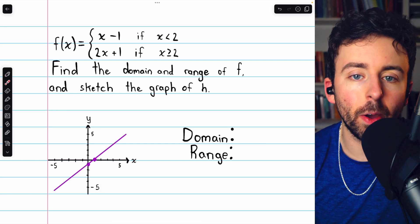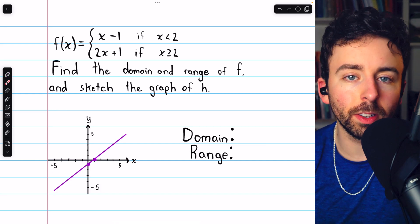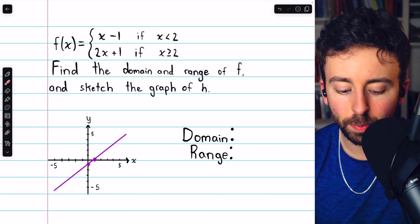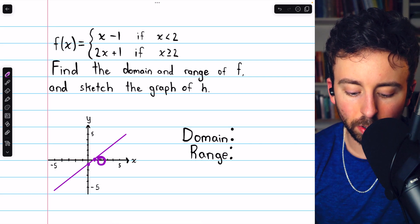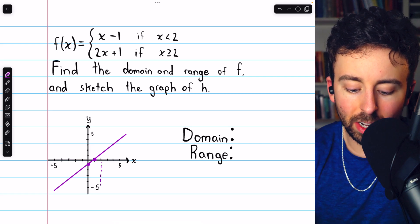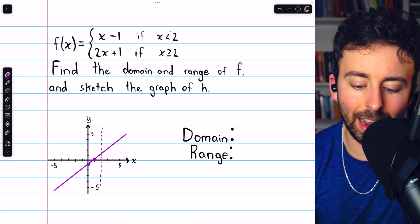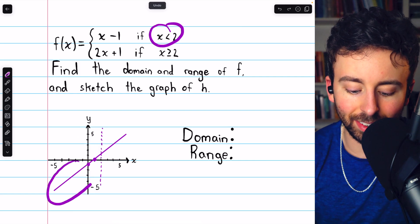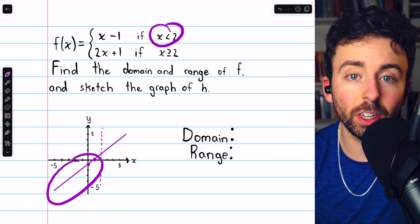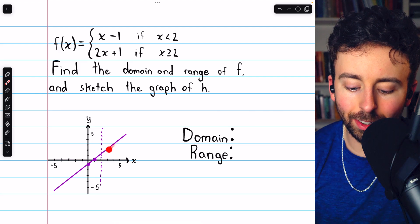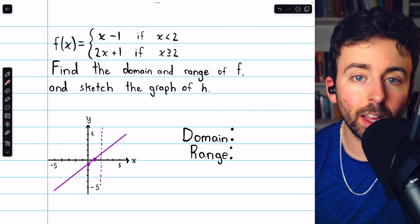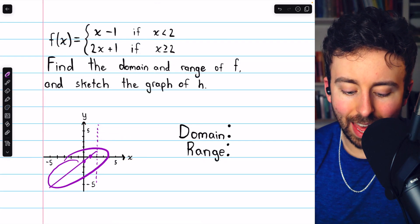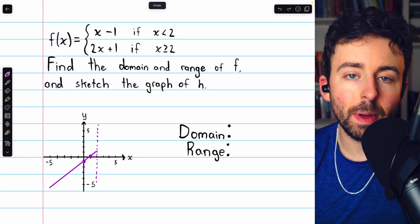The problem with this sketch right now is this is not what the function looks like everywhere. This is only what the function looks like when x is less than 2. So I have to find that. Where is x equals 2? Well, that's right here. So it should only be to the left of this, because x has to be less than 2, that this line is what the function looks like. So our function f doesn't actually look like this to the right of x equals 2. We need to make this line a little bit shorter. We go up to x equals 2, but not past it.